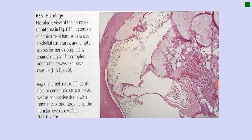Histologically, complex odontomes do not resemble a tooth but contain normal enamel, dentine, and pulp present in anatomical arrangement. The histological view consists of a mixture of hard substances, epithelial structures, and empty spaces formerly occupied by enamel matrix. The complex odontome always exhibits a capsule. Structures visible include dentin, outer cementoid structures, as well as connective tissue spaces.